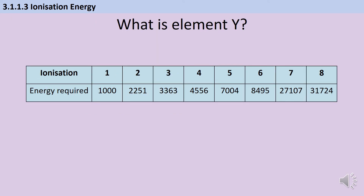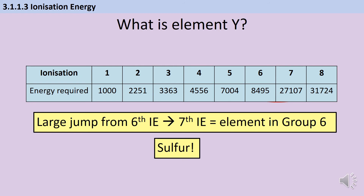Another question tells us an element is in period three and asks us to identify it from ionization energy data. Looking through the data, the first six ionization energies increase by roughly similar amounts, but there's a sudden dramatic increase from the sixth to the seventh. This means removing the first six electrons was comparatively straightforward but the seventh was much harder — it's being taken from a new shell much closer to the nucleus. The element is in group six, and since it's period three, it must be sulfur.